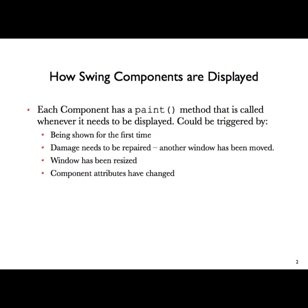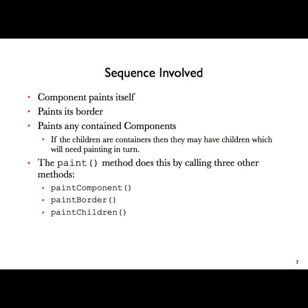We might resize this window and as a result buttons might need to be rescaled. This is the hierarchical thing: the window is a container — a frame — which contains a panel, which contains other panels, which in turn contain buttons. When you change the size of that window, that calls paint on the frame, which calls paint on each of the panels within it, which eventually calls paint on all the components.